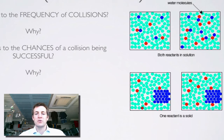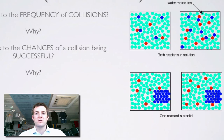What happens to the chances of a collision being successful? This diagram shows a solid reacting with a reactant in solution — low concentration versus higher concentration. Again, more likely to collide if there are more particles per unit volume. But the chances of a collision being successful don't change, because simply having more particles doesn't mean a greater proportion have enough energy to react. The particles have the same energy on average.